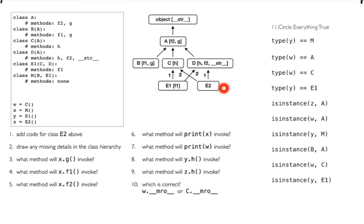I've created all these things and this is the picture. From that, I'm creating a few different objects from different types in this picture. The first thing we want to do is add some code for class E2. I can see that E2 is over here in the diagram, but I haven't written any code for that yet, so let's do that.